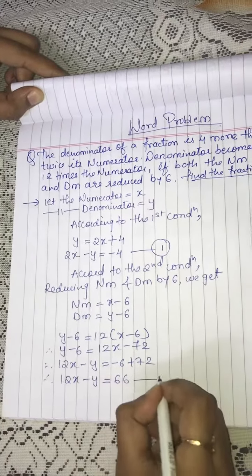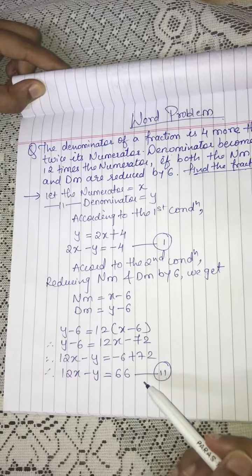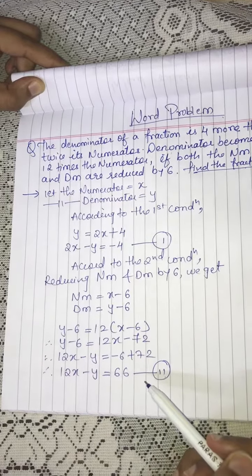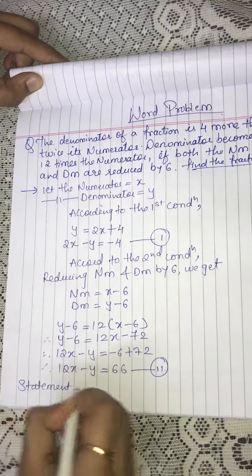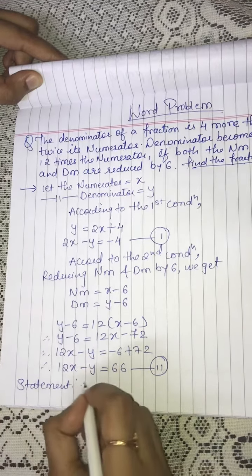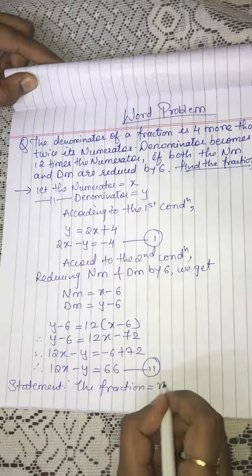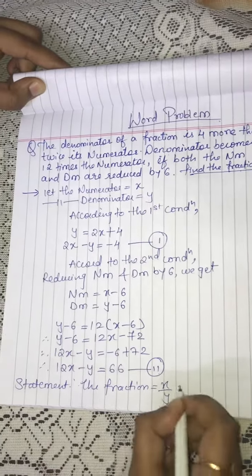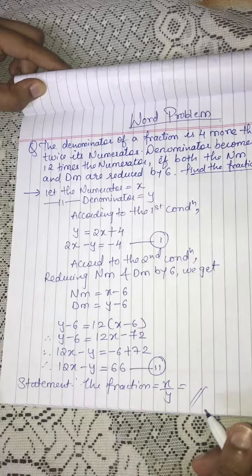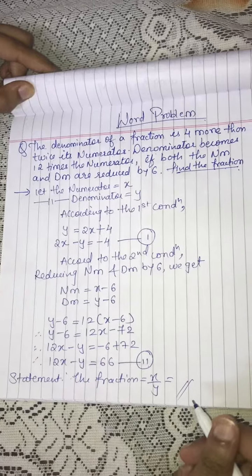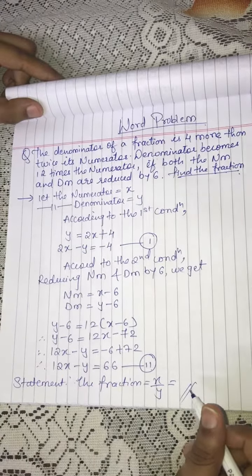Now solve these two simultaneous equations to find the values of x and y. Finally, write the statement: the fraction is equal to x upon y. Substitute the values of x and y to find the fraction. I hope you understand, and if you have any queries please let me know. Thank you.